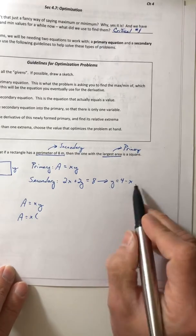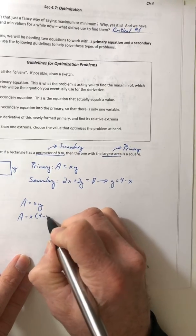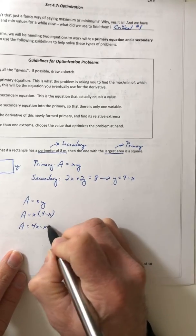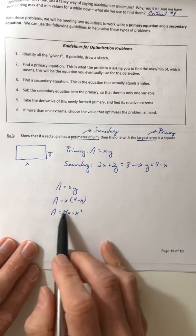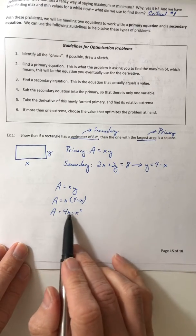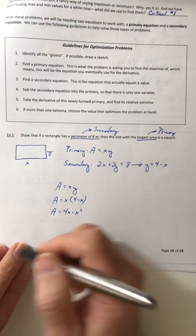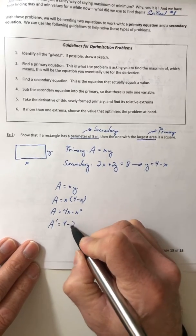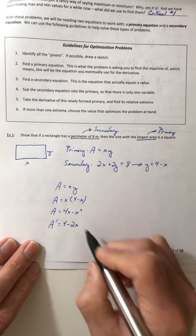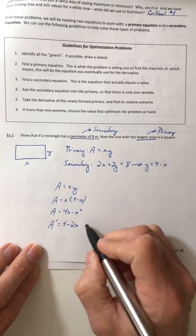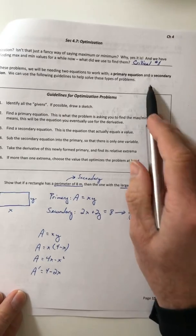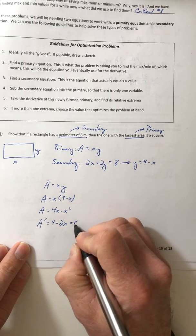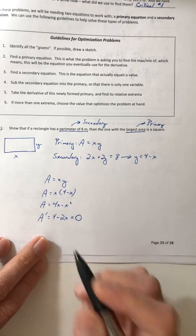Now that I have it in terms of one variable, I'm going to find the derivative. A' = 4 - 2x. Just like before, you're finding your critical numbers, same process. Once you have your derivative, set it equal to 0 and solve for x. So x = 2.